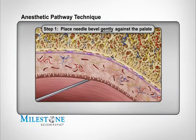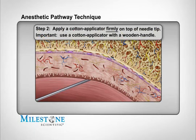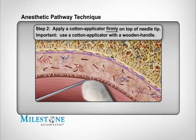Step 1: Start by gently placing the bevel of the needle against the surface of the palate. This is achieved by holding the handpiece at approximately a 45-degree angle to the palatal surface. Step 2: Stabilize the needle by applying firm positive pressure from a cotton applicator. It's best to use a wooden handle cotton applicator so that adequate positive pressure can be applied. The applicator also absorbs any excess anesthetic solution and makes for a more comfortable needle entry.